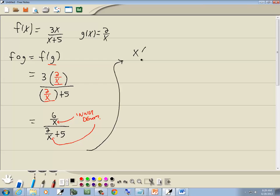So multiply the top part by x. And we'll multiply the 2 over x by x. And we also multiply the 5 by x. Now these x's are going to cancel, and these x's are going to cancel. So we're left with 6 here, and down below we have 2 plus 5x. And that's our answer.